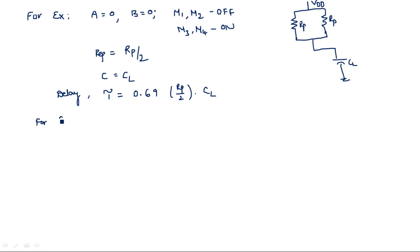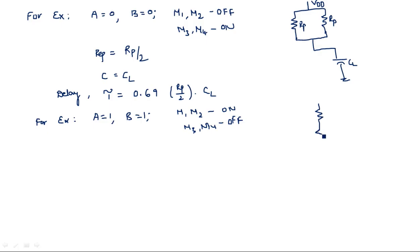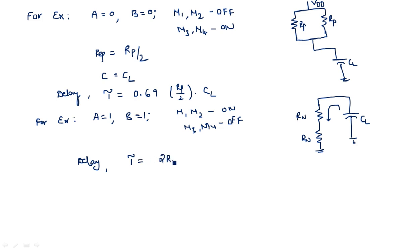Now for A = 1 and B = 1: opposite conditions occur — M1, M2 come into ON state and M3, M4 come into OFF state. As these two NMOS transistors are in ON state, we have one RN followed by another RN in series, connected to load capacitor CL. Previously the capacitor was charging; now it is discharging through these two series resistors. The time delay tau = 0.69 × (RN + RN) × CL = 0.69 × 2RN × CL.